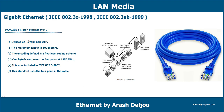Cable segments for 1000Base-T have a maximum length of 100 meters. It uses Cat5 four-pair cable or higher (Cat5E or Cat6). The encoding is a five-level coding scheme, with one byte sent over four pairs at 1250 MHz. It is defined in IEEE 802.3ab (1999) and incorporated into IEEE 802.3 (2002), using all four pairs in the cable.